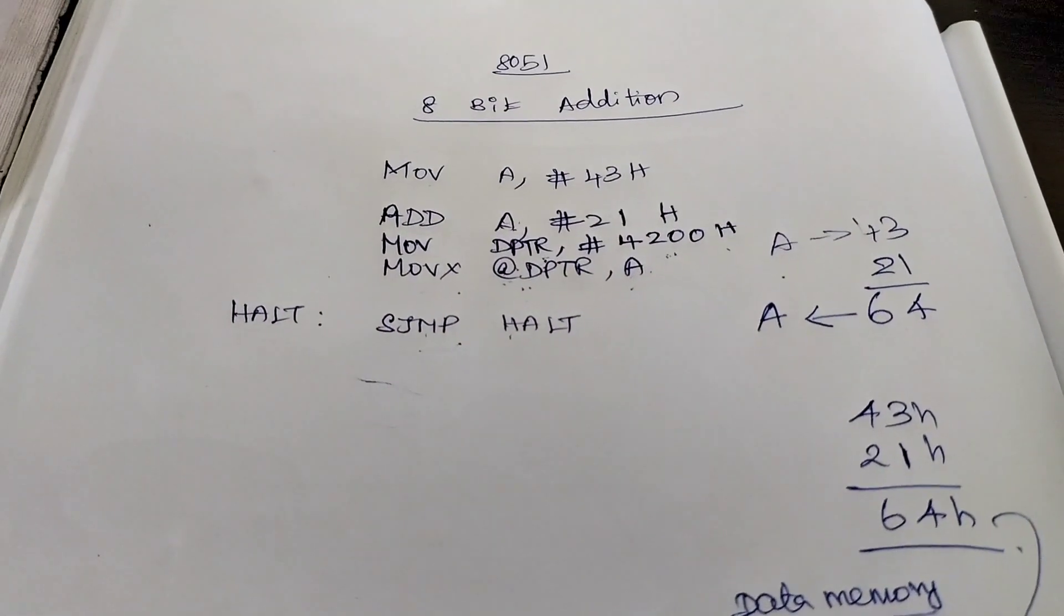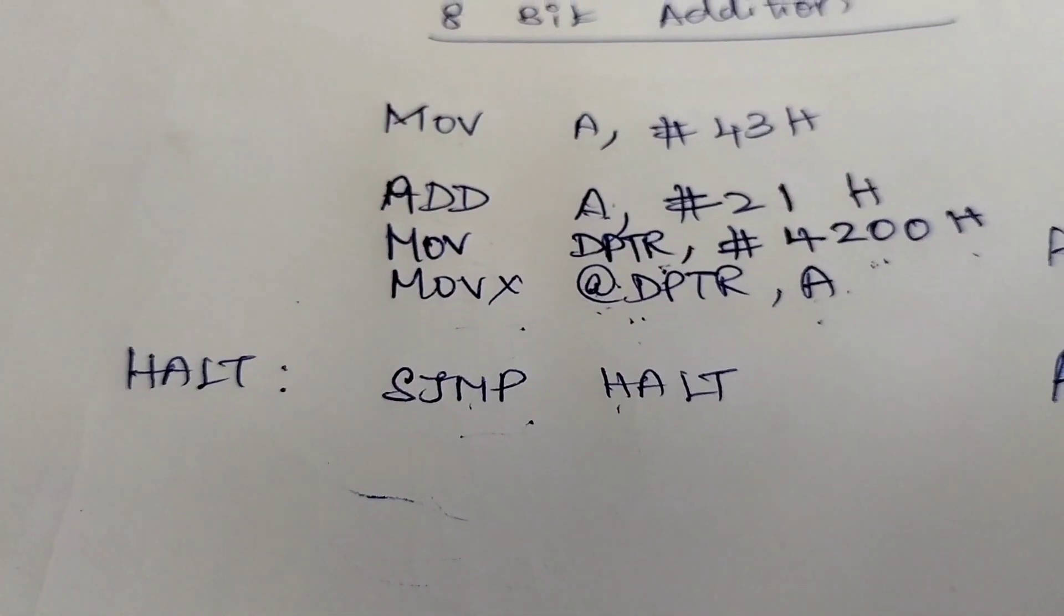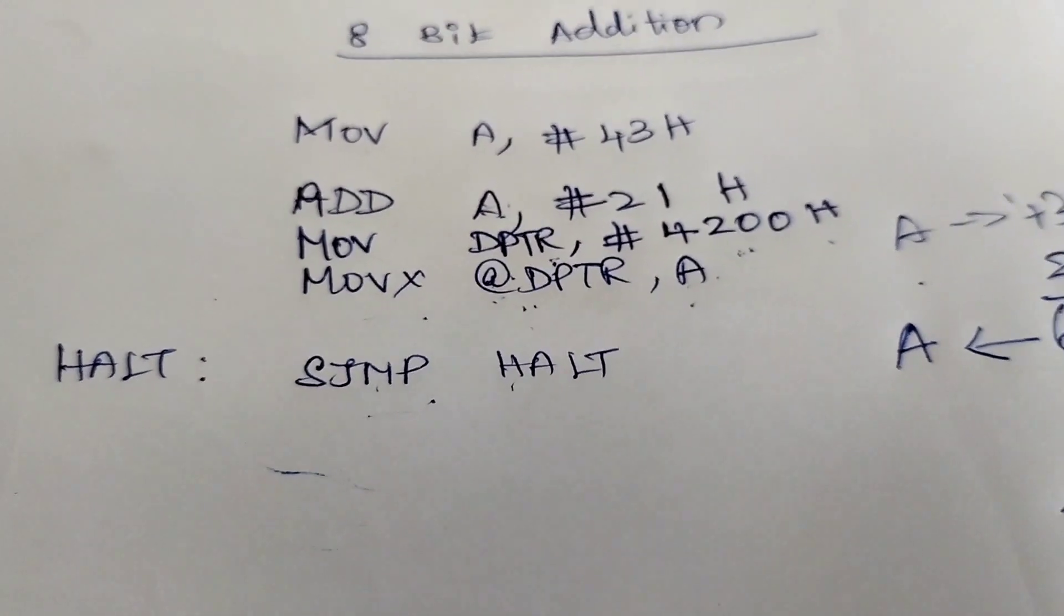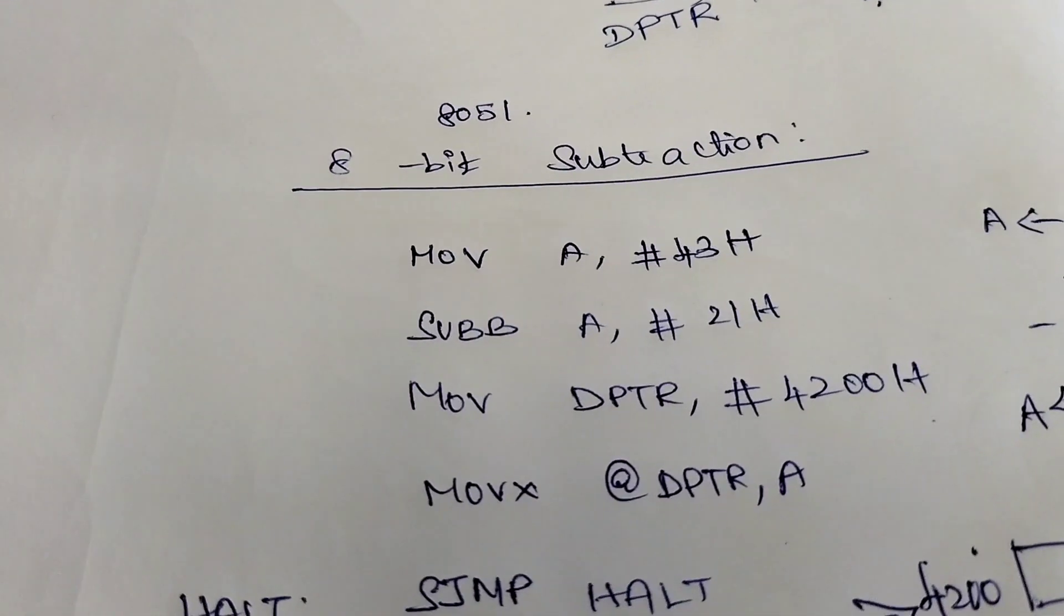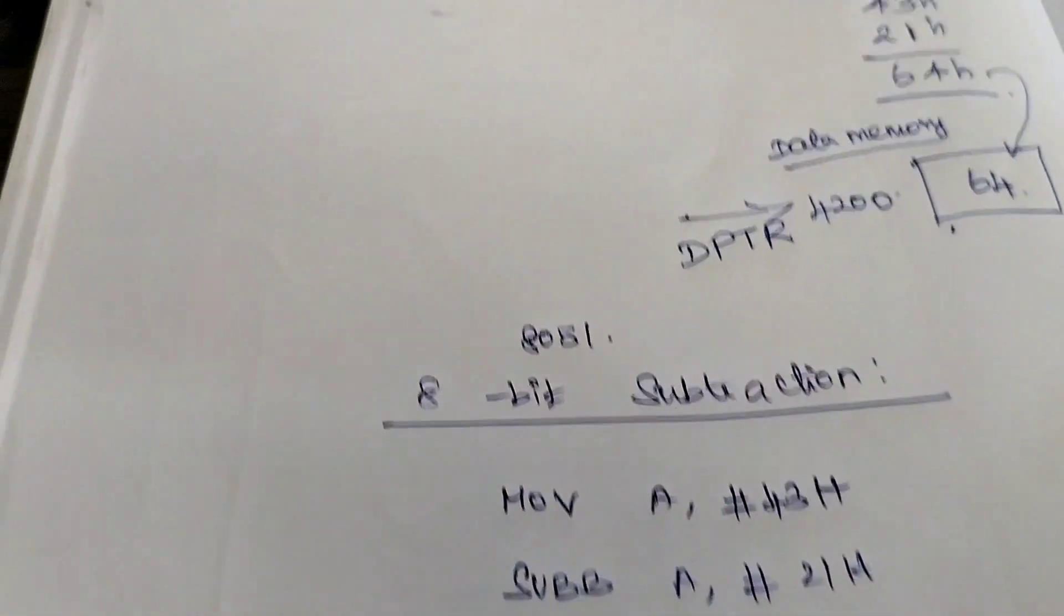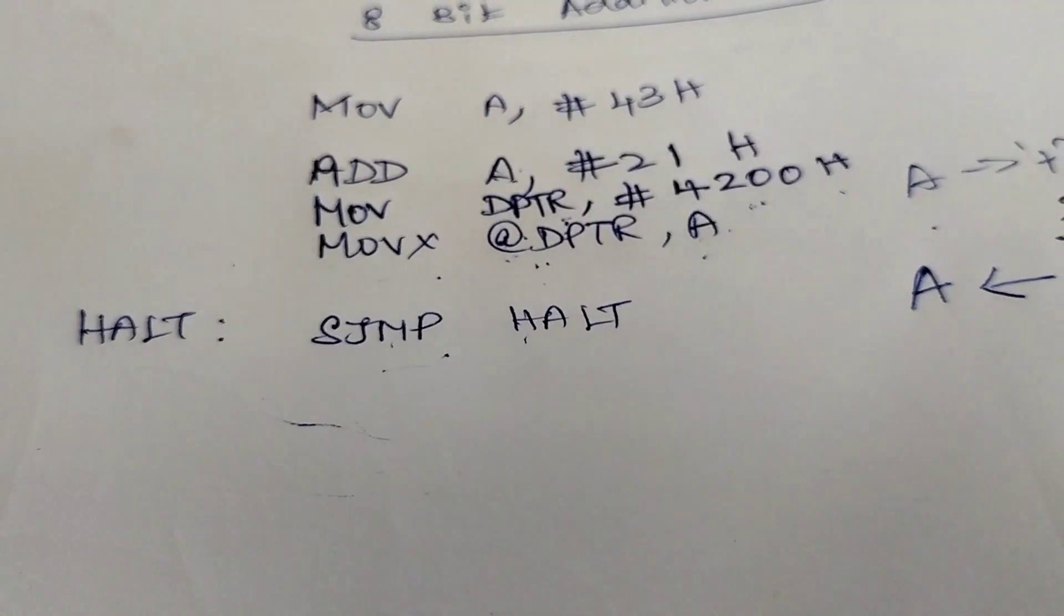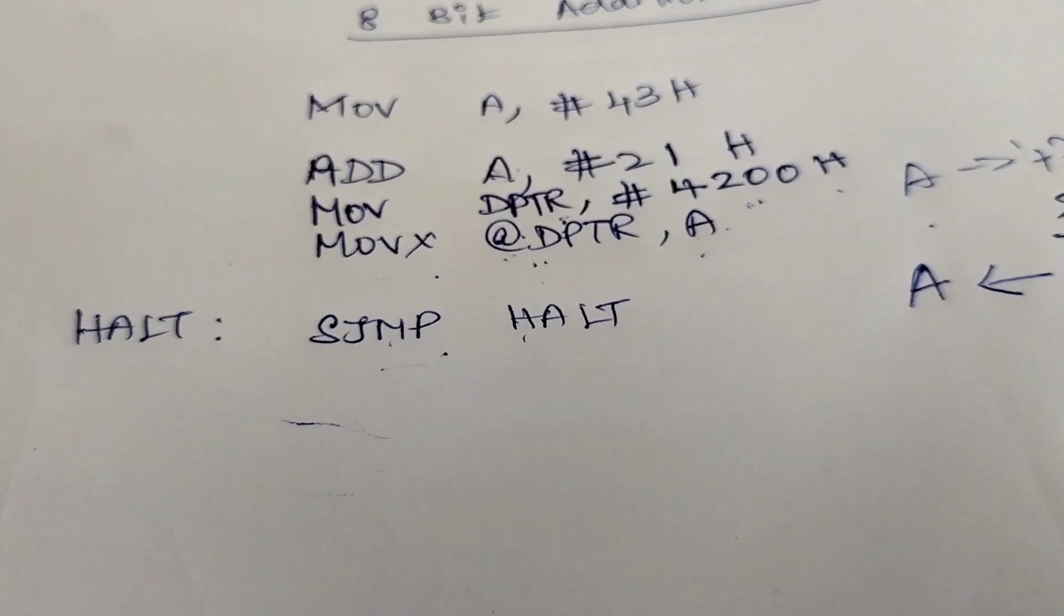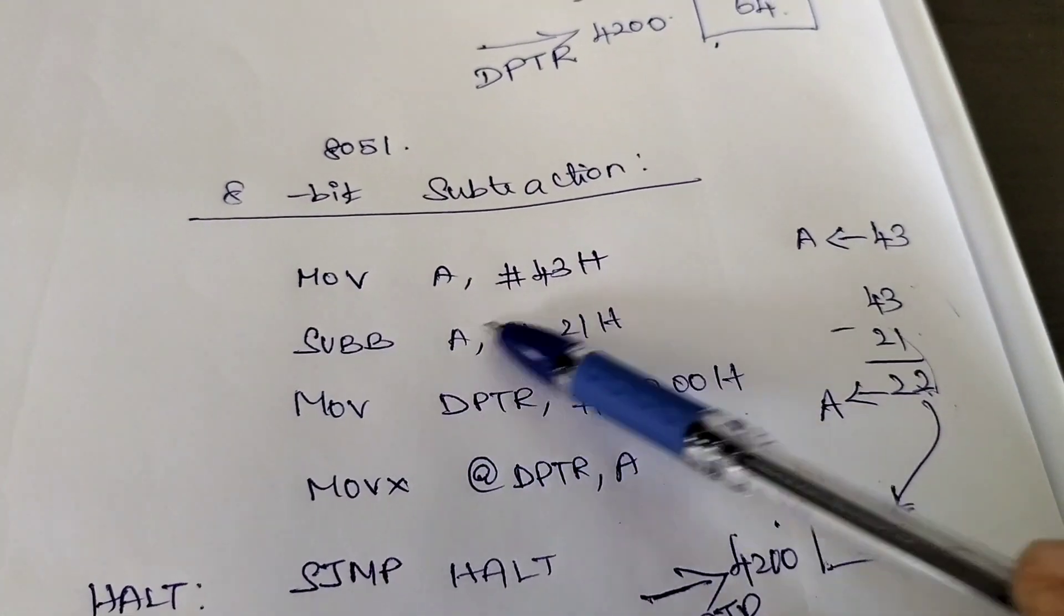When you compare the addition program and subtraction program, only one instruction is different. We have already executed the addition program in the previous diagram using the 8051 kit. We only need to change the instruction to SUBB. Instead of typing the whole instruction, we are going to change only the second instruction.